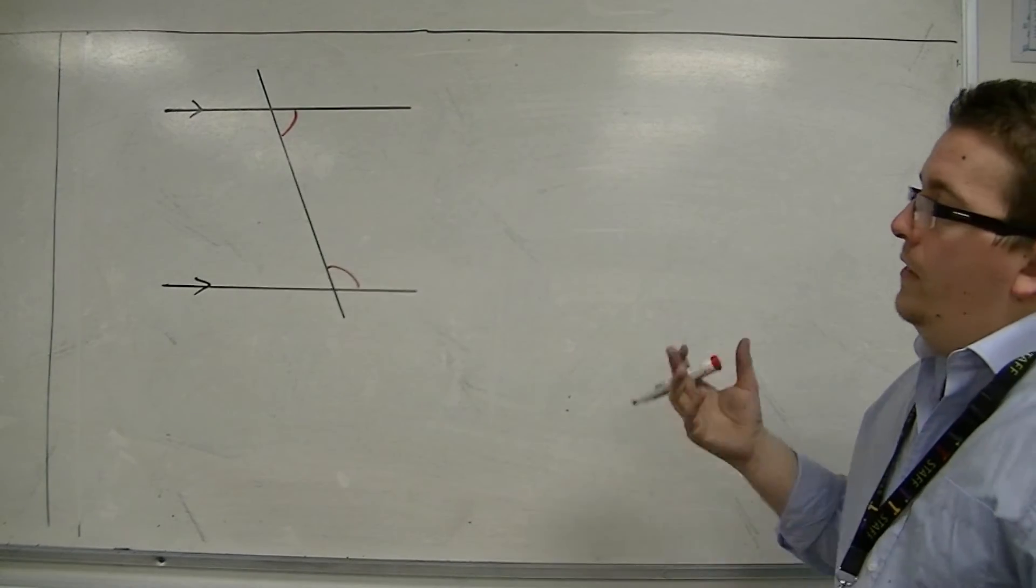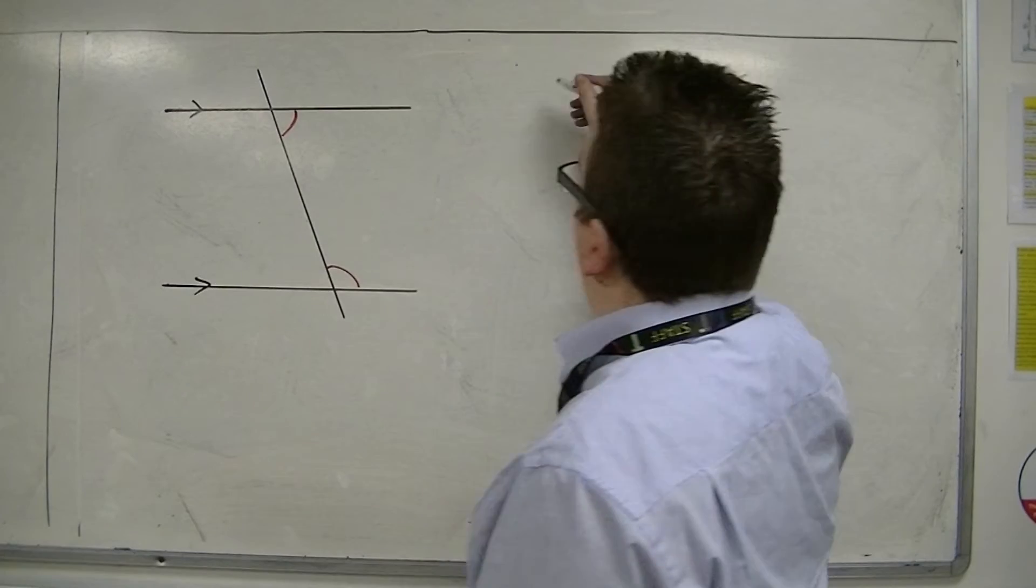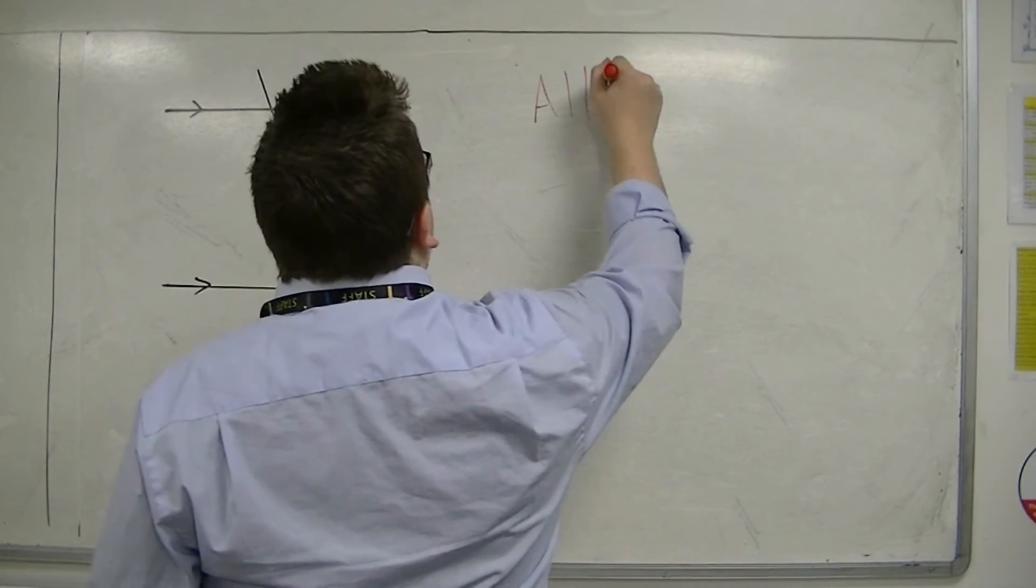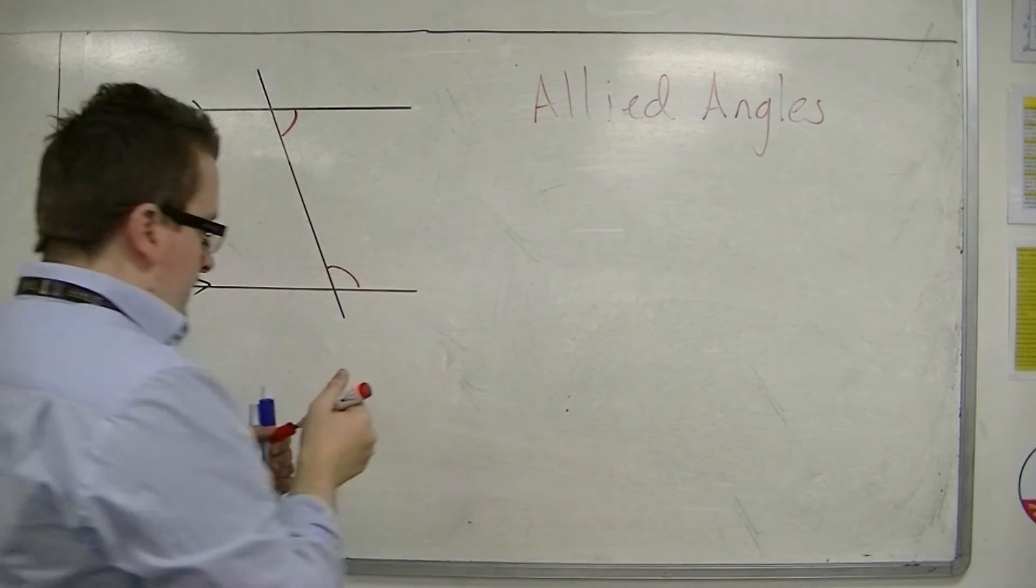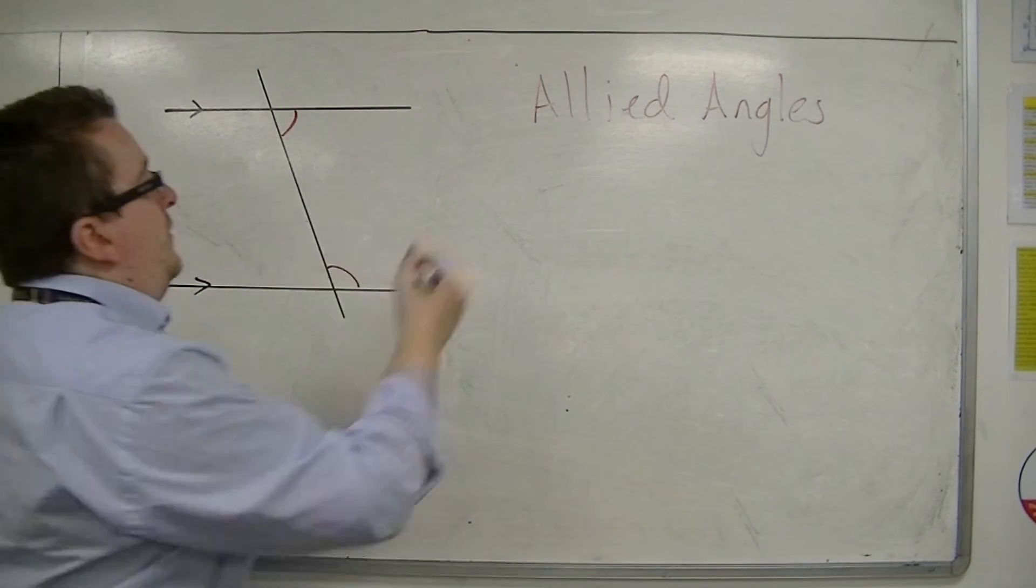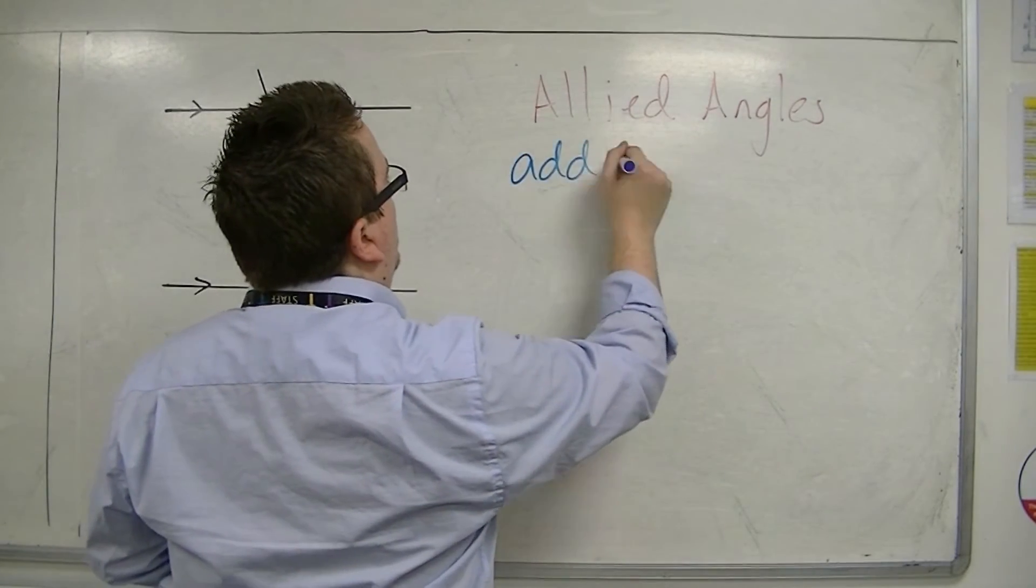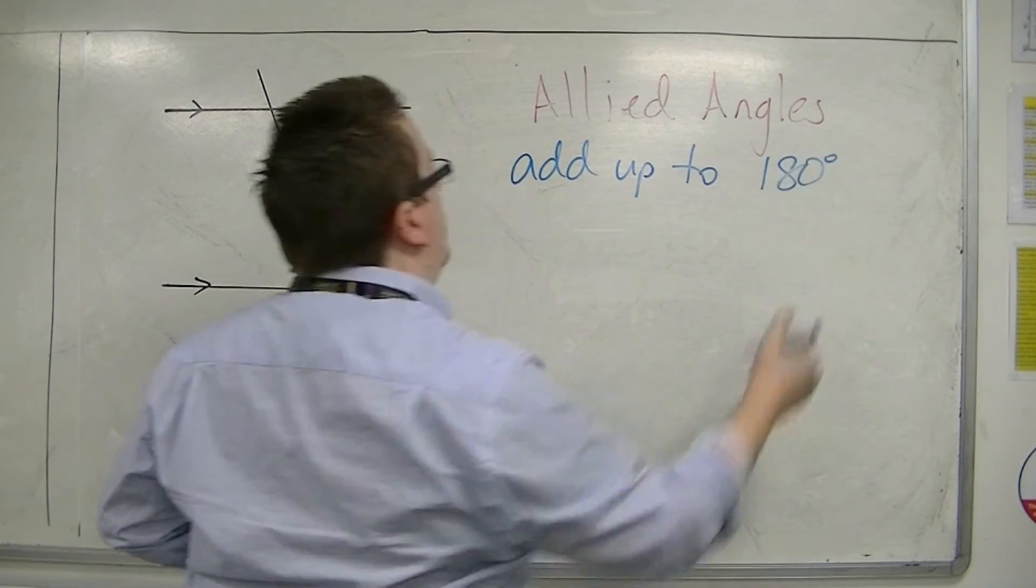However, they do have a certain property. They are known as allied angles, and their property is that they add up to 180 degrees.